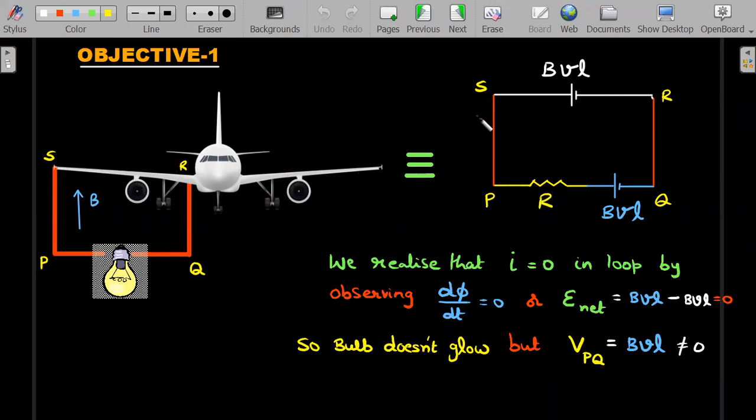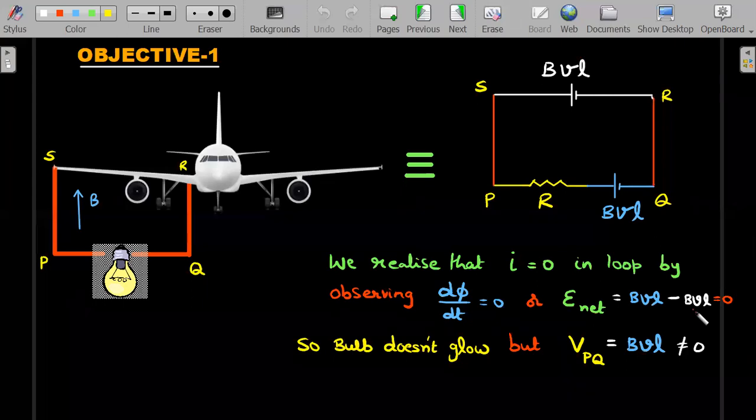You realize that the net EMF induced in the entire circuit which causes the current, if any, is zero because this BVL and this BVL effects cancel each other. You could realize this even by looking at the rate of change of flux also. Magnetic field lines which are there creating the so-called flux for this particular problem are not going to change the value over a period of time. So either by dΦ/dt equal to zero logic, or by E_net is equal to zero logic, you should be able to realize that the value of this EMF and therefore the induced current is zero.